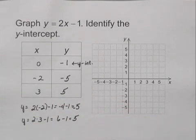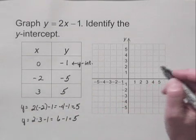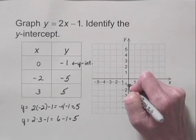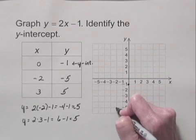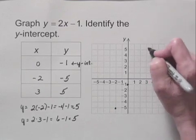Now let's plot these points and draw the graph that contains them. I have 0, negative 1, and I have negative 2, negative 5, and I have 3, 5.